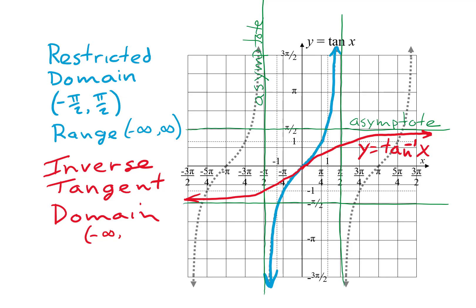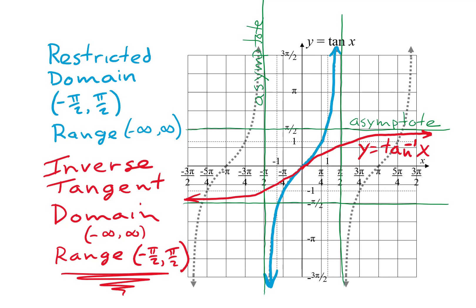Notice that the inverse tangent function has a domain of negative infinity to positive infinity and a range of negative pi over two to positive pi over two. As we recall from our study of inverse functions, the domain of the inverse function is always the same as the range of the original function, and the range of the inverse is the domain of the original. This means when we restricted the domain of tangent to get a one-to-one function, we caused the range of the inverse function to be negative pi over two to positive pi over two. This range is the key to why the first two examples worked and the third one did not.